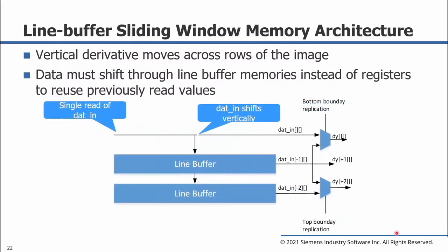The vertical derivative sliding window memory architecture is very similar to the horizontal derivative architecture, except that instead of shifting through registers, we are shifting the data through line buffer memories. Similarly, we have reduced the reading of datin to a single read per iteration of the vertical derivative loops. The data is shifted through the line buffers where each line buffer stores a previous line of pixel data, and the output gives simultaneous access to three pixel values. Boundary condition processing selects between the actual data from either the input, the line buffers, or the middle tap depending on whether we are replicating at the bottom or top of the image.